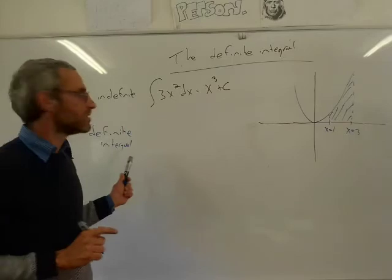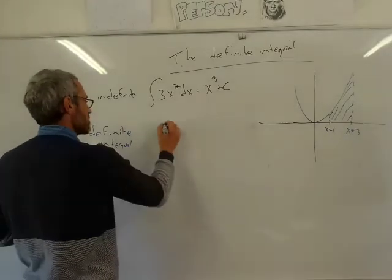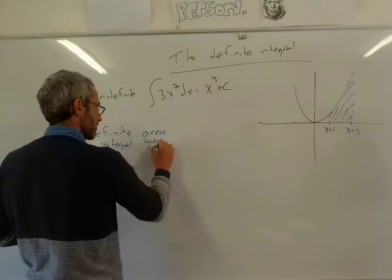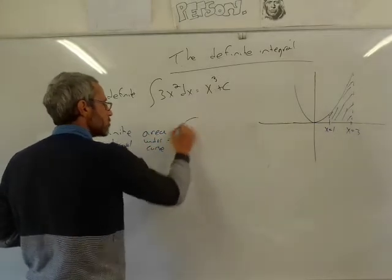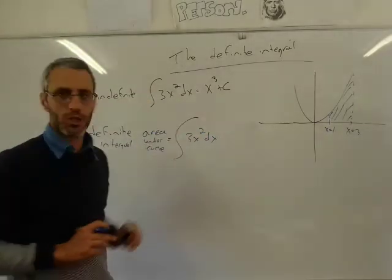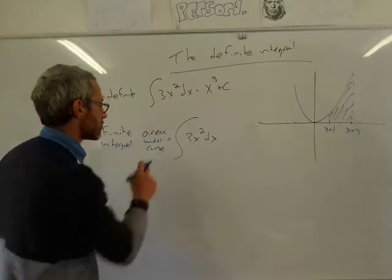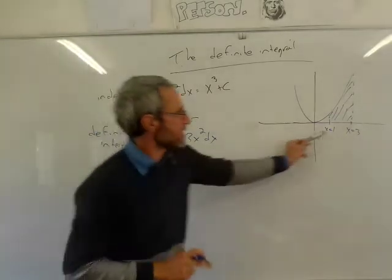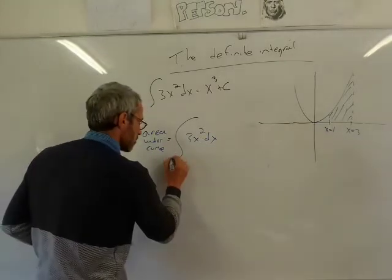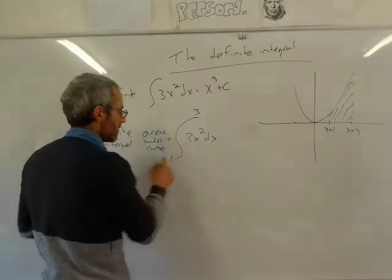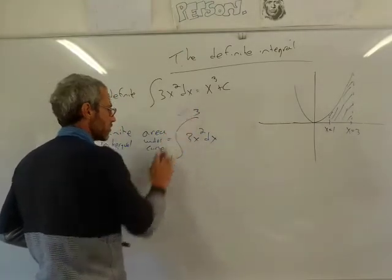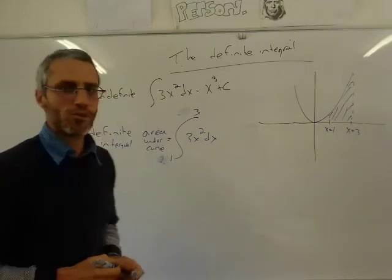The definite integral starts very similar — it is basically the area under the curve. It's equal to ∫3x² dx. The only difference is that we write down these two values of x. We're going to put from 1 to 3. That's basically what you'll see — x equals 1, x equals 3. Most of the time it just means from 1 to 3.